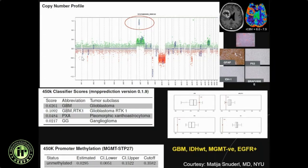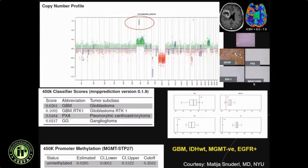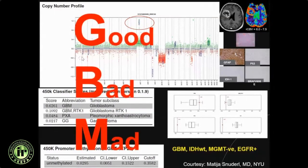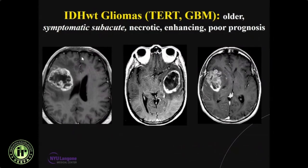This is what I consider a bad GBM. Majority of IDH wild-type gliomas — TERT-mutated GBMs — occur in older individuals. These are three different examples: necrotic enhancing masses, usually with poor prognosis, and more importantly, presenting with subacute symptomatic neurological deficit.